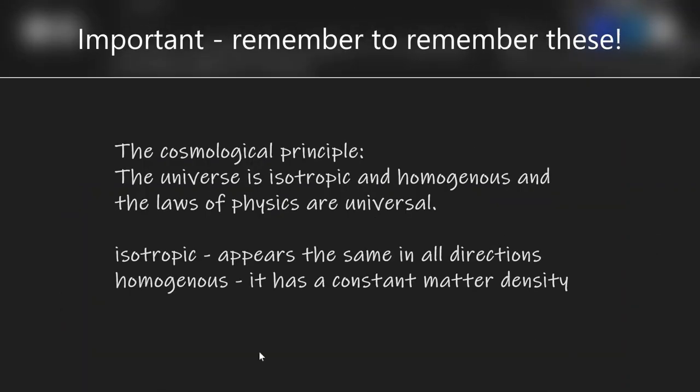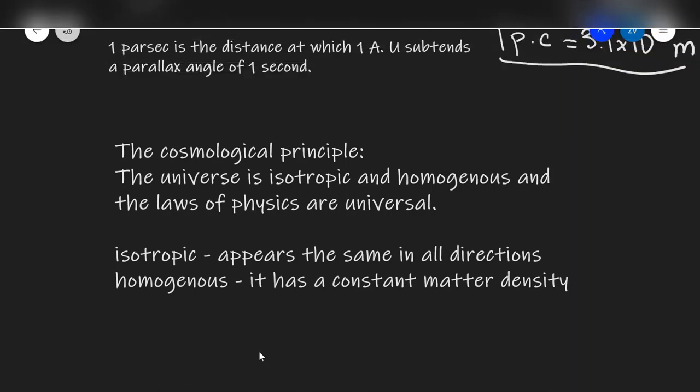Next up is the cosmological principle. This states that the universe is both isotropic and homogeneous, and that the laws of physics are universal. Isotropic means the universe appears the same in all directions. Homogeneous means that the universe, as far as we can tell, seems to have a constant matter density.